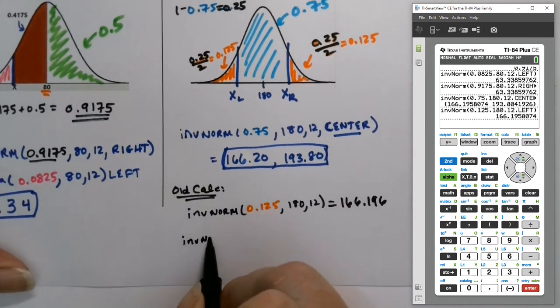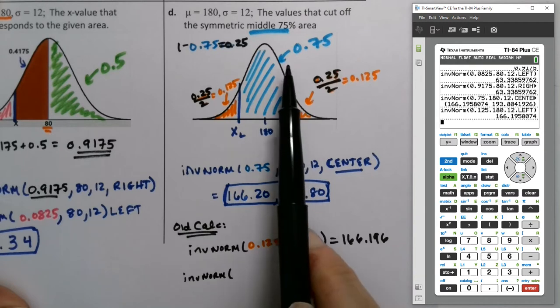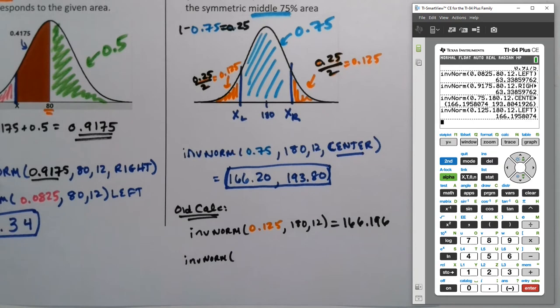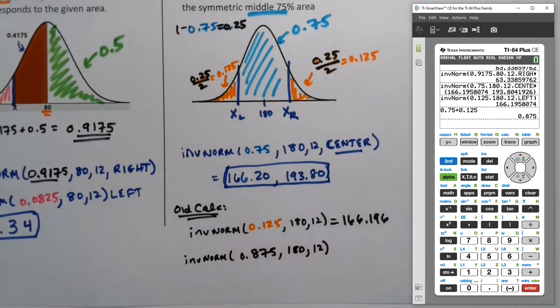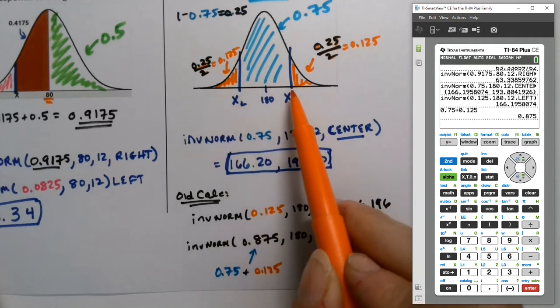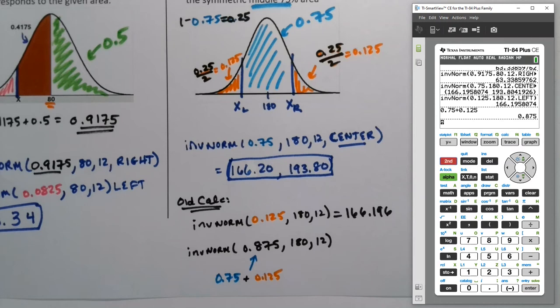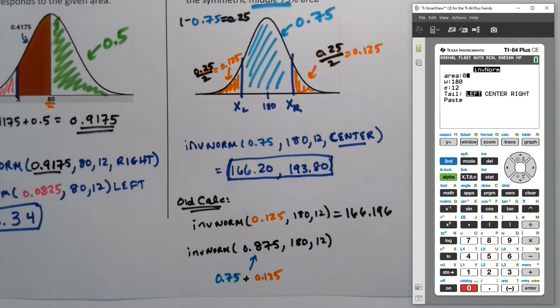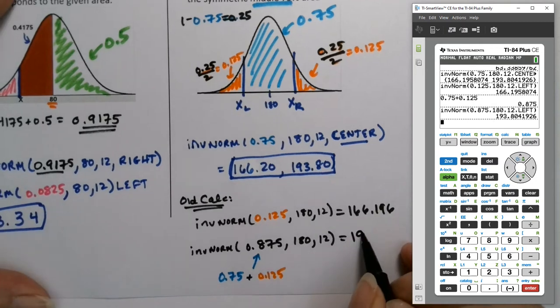And then for the other one, you have to do all the area to the left of this value here. The area to the left of this value here is the 75 and the 125 put together. So what's 0.75 plus 0.125? See, it's 0.875. So that's what we would put in. 0.875, 180 and 12. And I'm getting that from taking 0.75 plus 0.125. It's the left tail area. It's the area to the left of the value you're looking for. So I have to put these two zones, this blue zone and this orange zone together. All right. So then if I grab inverse norm, number three, right, there it is. And I say 0.875 and leave everything else the same, right, because automatically those old calculators are left-tailed, then it's 193.80.